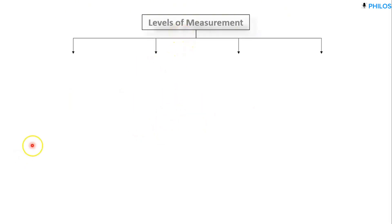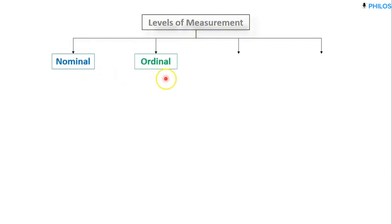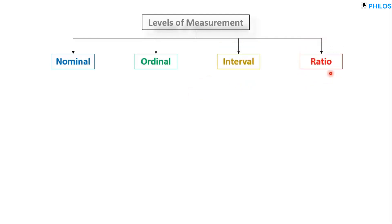We have four levels of measurement. The first one is the nominal level of measurement, the second is the ordinal level of measurement, the third one is the interval level of measurement, and the fourth one is the ratio level of measurement. We are going to look at each level, so let's take the nominal first.